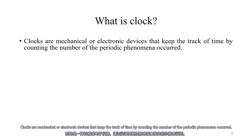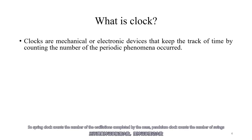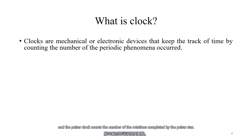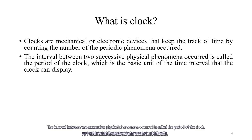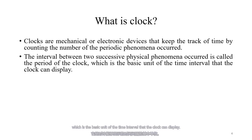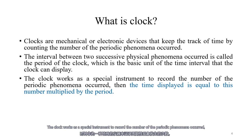Clocks are mechanical or electronic devices. They keep track of time by counting the number of periodic phenomena that occur. A spring clock counts the number of oscillations completed by the mass, a pendulum clock counts the number of swings, and a crystal clock counts the number of oscillations. The interval between two successive physical phenomena is called the period of the clock, which is the basic unit of time interval that the clock can display.